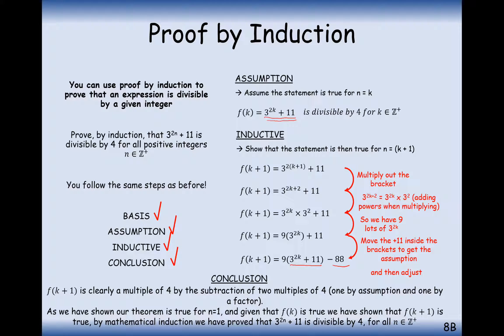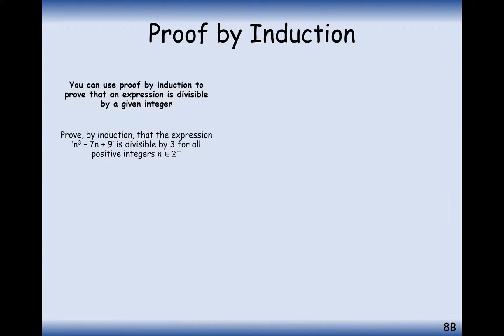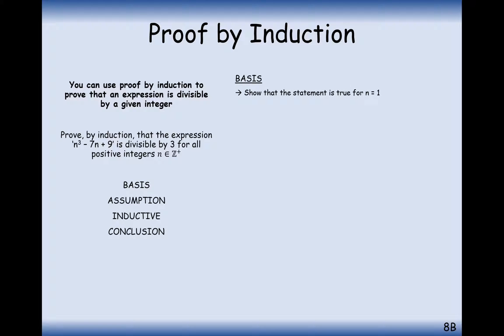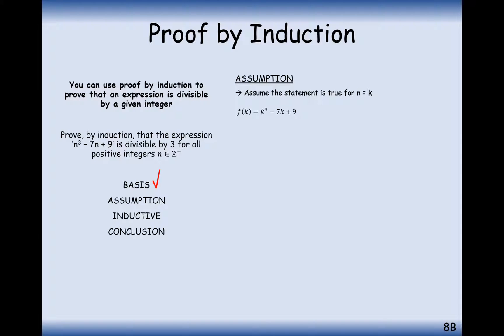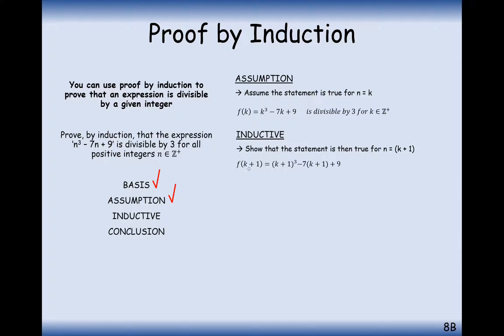That's how you do proof by induction for divisibility questions. Let's have a go at a second one. Prove by induction that n cubed minus 7n plus 9 is divisible by 3 for all positive integers n. Same three steps as before — first, substituting n equals 1 gives 3, which is clearly divisible by 3. Next is the assumption step: assume your theorem is true for n equals k. Then comes the inductive step — start with f(k+1), which is what you want to show is divisible by 3.